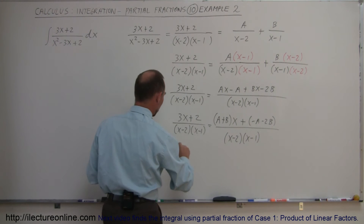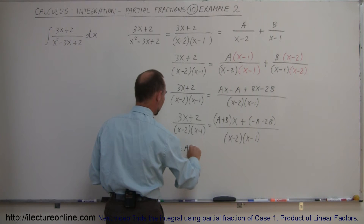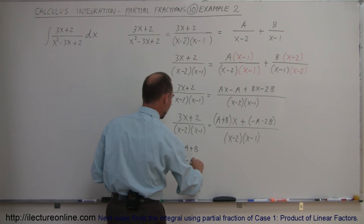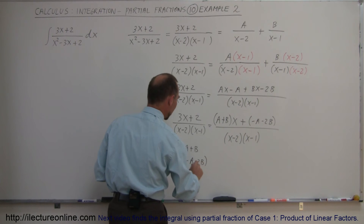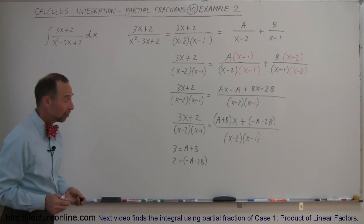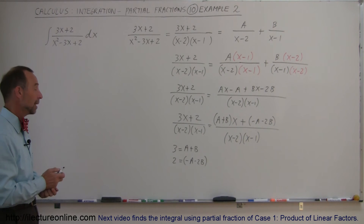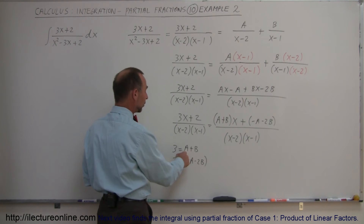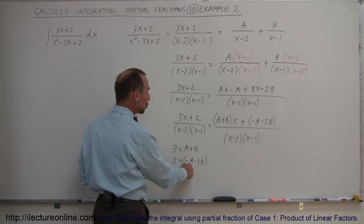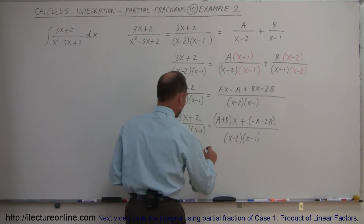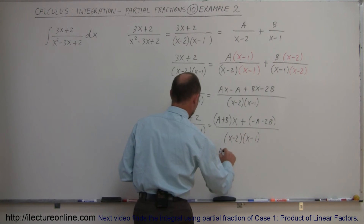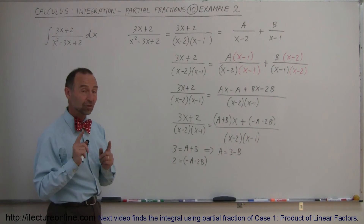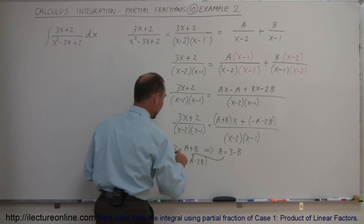So we have that 3 equals a plus b, and 2 equals minus a minus 2b. We'll solve the first equation for one variable: a is equal to 3 minus b, simply by moving b to the other side. Then we substitute that into the second equation.